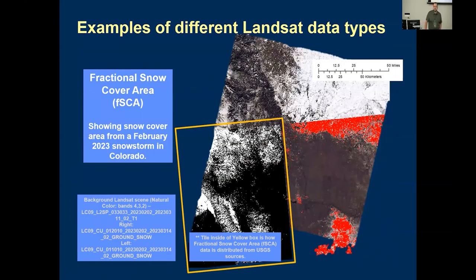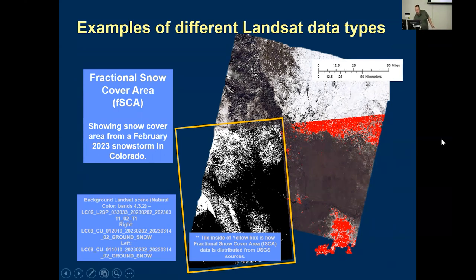I also looked at the snow product, again using Colorado Springs since that's what I'm familiar with. I was lucky enough to pull a picture right after a snowstorm. Similar to the burned area product, this red represents specific snow pixels that were pulled out, shown on top of the natural color image in the background — whereas natively it would just look like the raw image.